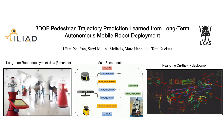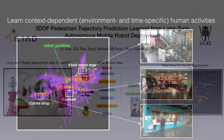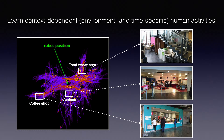This paper presents a novel 3-degree-of-freedom pedestrian trajectory prediction approach for autonomous mobile robots. In real life, most human activities are environment and time-specific. We aim to learn context-dependent human activities from long-term robot deployment data.